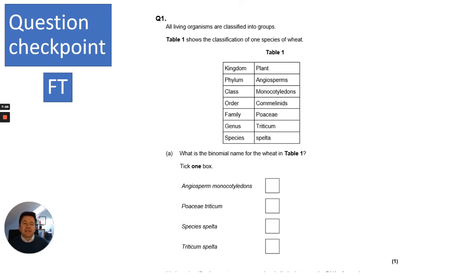This question gives you a classification of one species of wheat. They've given you the classification hierarchical order, but they want to know what is the binomial name for the wheat in table one. If you remember back to what I was saying, the binomial name is the genus and the species. If we look, genus is Triticum and species is spelta, so it will be Triticum spelta.